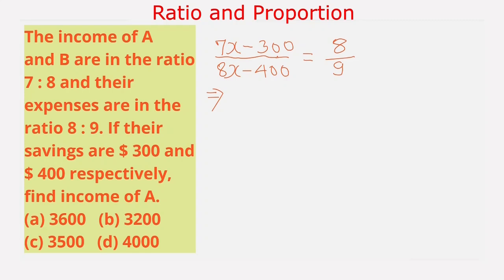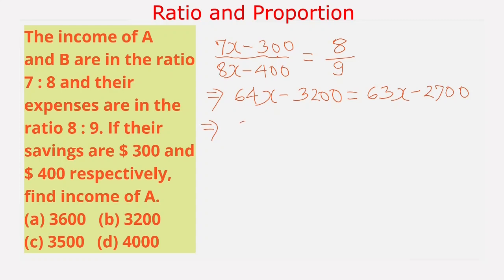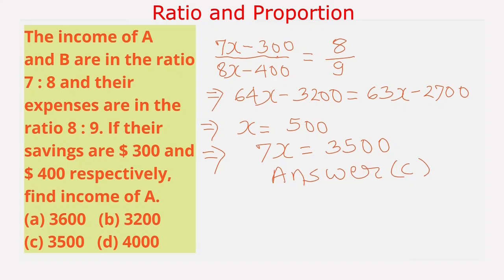By cross multiplication: 8 times (7x − 300) = 9 times (8x − 400), giving 56x − 2,400... Solving: 8 × (8x − 400) = 9 × (7x − 300) gives 64x − 3,200 = 63x − 2,700, so x = 500. Income of A is 7x = 7 × 500 = 3,500. From the given options, our answer is option C, 3,500.